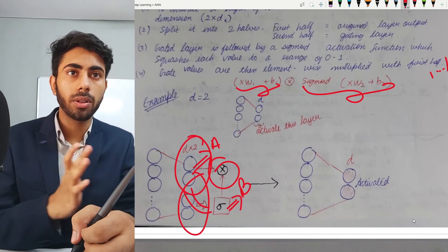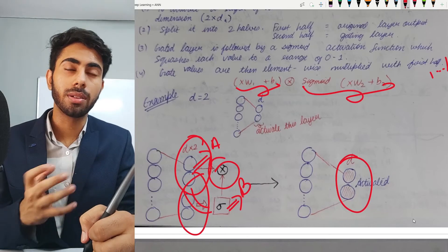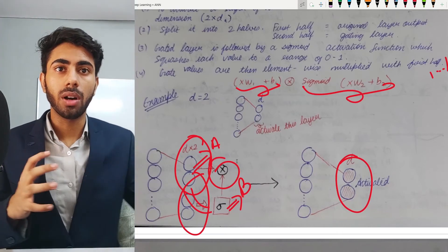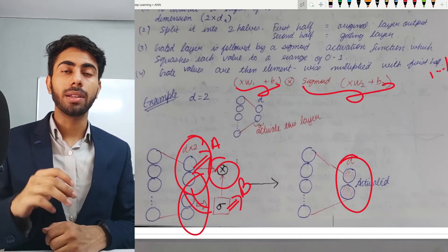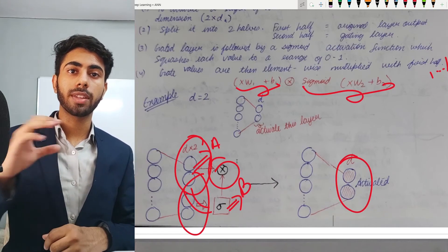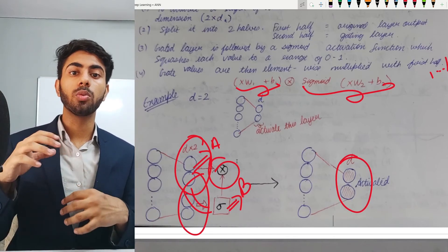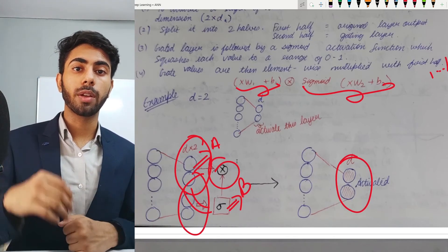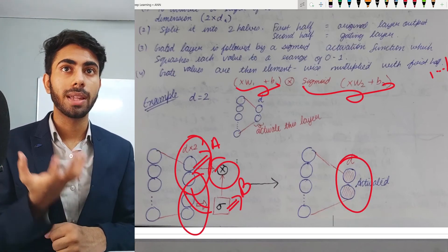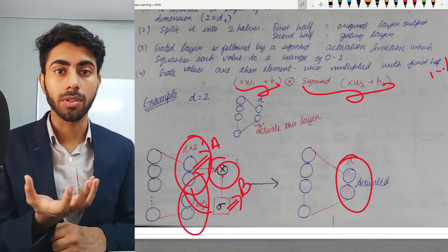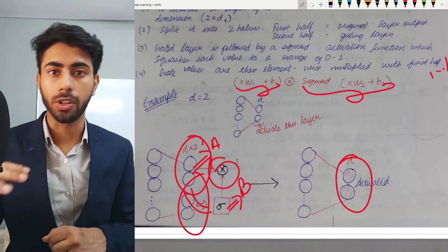Once both halves are computed, we perform an element-wise multiplication between the output from the first half and the output from the second half (the sigmoid output). The result of this element-wise multiplication is the final output of the GLU activation function. So the steps are: double the layer dimensionality, split into two halves, apply sigmoid to the second half, and multiply the two outputs element-wise.